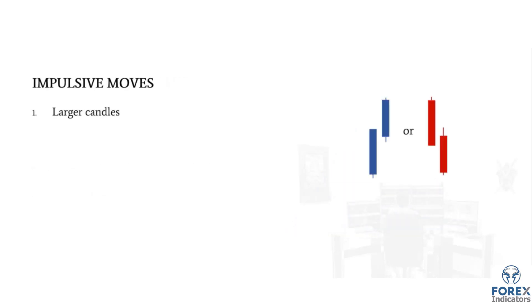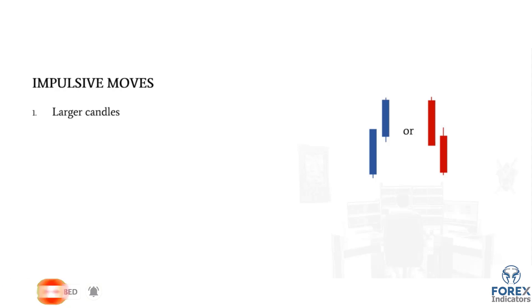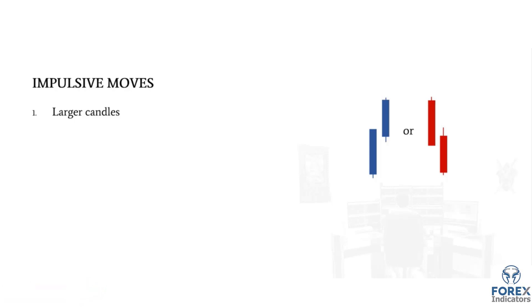The base of those filters is impulsive and corrective moves. Impulsive moves have very defined characteristics that you want to learn to spot so they become automatic and subconscious. The first characteristic is that impulsive moves tend to have larger candles. From your study of candlesticks, a very large candle — either bullish or bearish — means there was a lot of order flow on the buyer or sell side to create that candle.